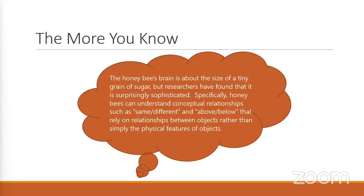The honeybee's brain is about the size of a tiny grain of sugar — think about that. But research has found that they're actually very sophisticated creatures. I say it all the time: they're way smarter than us, and I 100% believe that. They've been researched enough to know that they can tell same and different, or above and below, on objects. Not only will they know where an object is, but they can also identify these physical features as well. Pretty impressive.